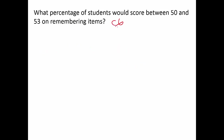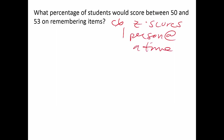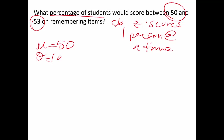Now we're getting into chapter six, where we're talking about Z scores — working with one person at a time. The question is: what percentage of students would score between a raw score of 50 and a raw score of 53? I'm working with individual scores, not a Z test using samples of people. The numbers I need are mu=50 and sigma=10.